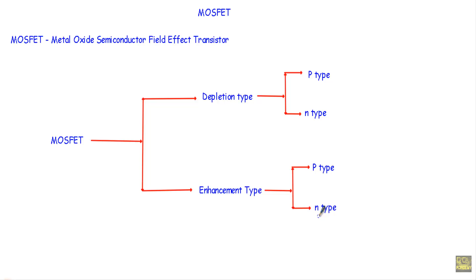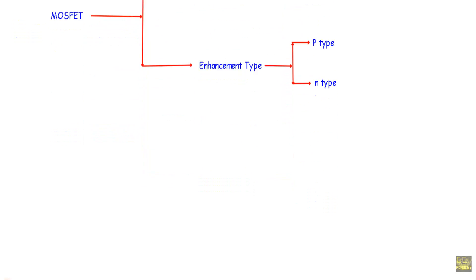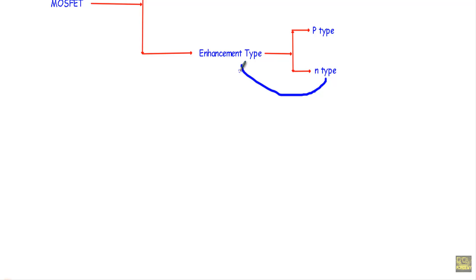In this video I will show you the construction and working principle of n-type enhancement MOSFET, and in the next video I will show you the construction and working principle of p-type enhancement MOSFET. At first you have to understand the construction of a metal oxide semiconductor structure, after which I will talk about the field effect which forms the metal oxide semiconductor field effect transistor. Now I will discuss the construction of n-type enhancement MOSFET.